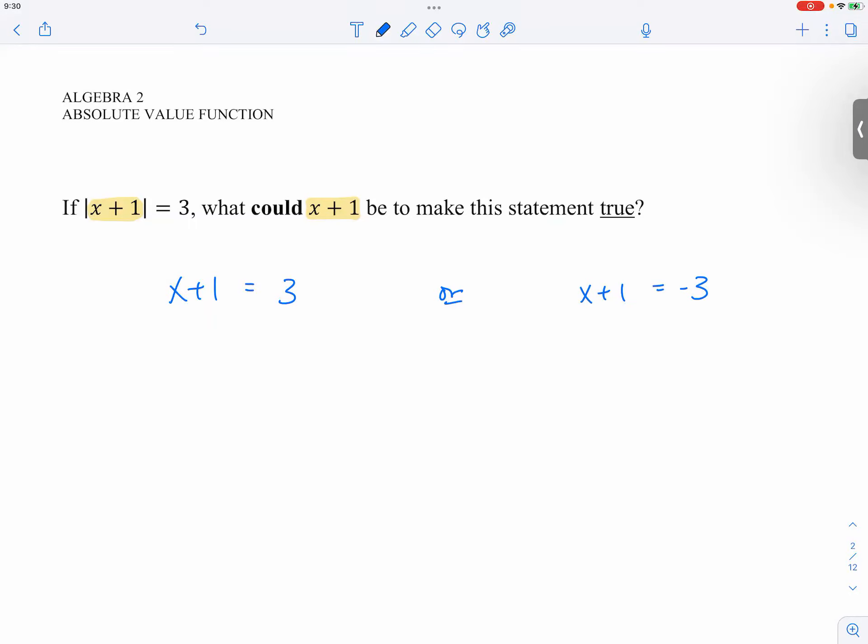So can you see how through this thought process we remove the absolute value symbol? When we remove the absolute value symbol we are actually thinking what could this thing x plus 1 be? x plus 1 could be 3, x plus 1 could be negative 3. Well if that is the case, x could be 2, x could be negative 4.